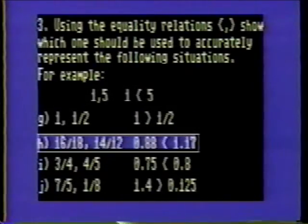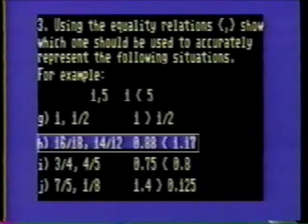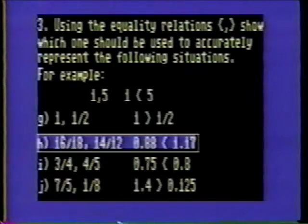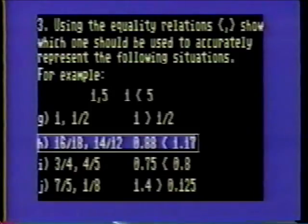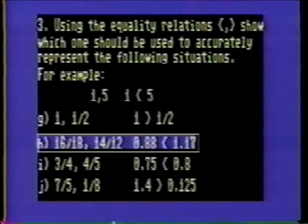Problem 3H: 16 divided by 18 is the same as 0.88, and 14 divided by 12 is the same as 1.17. Therefore, 0.88 is less than 1.17 because 1.17 is further from zero than 0.88.